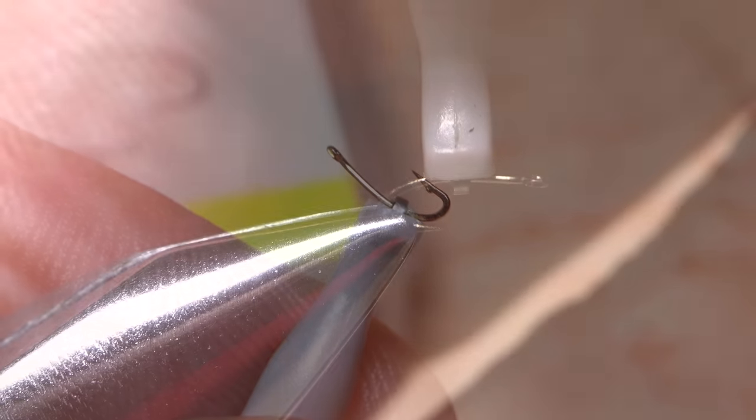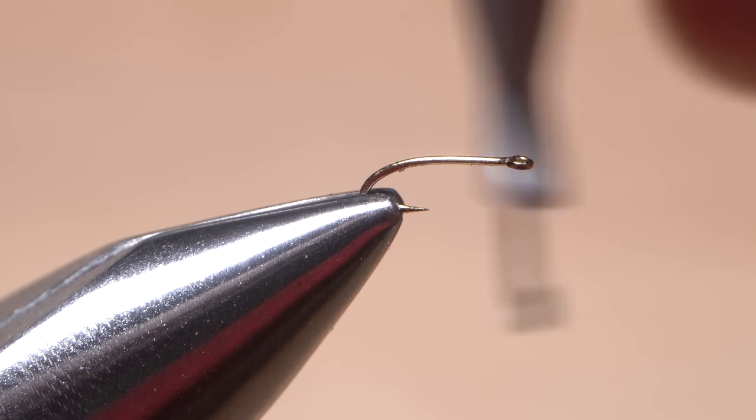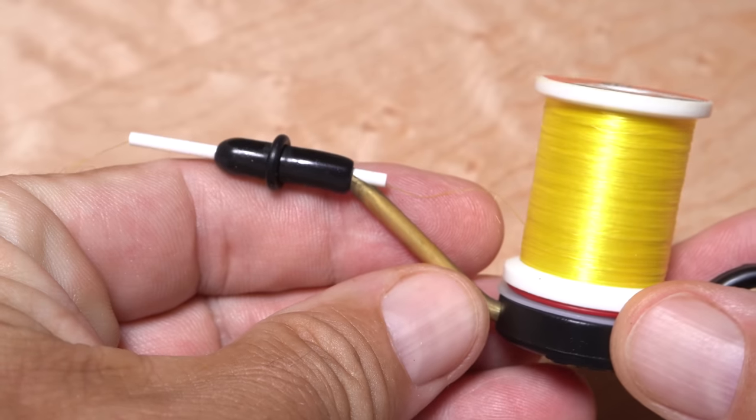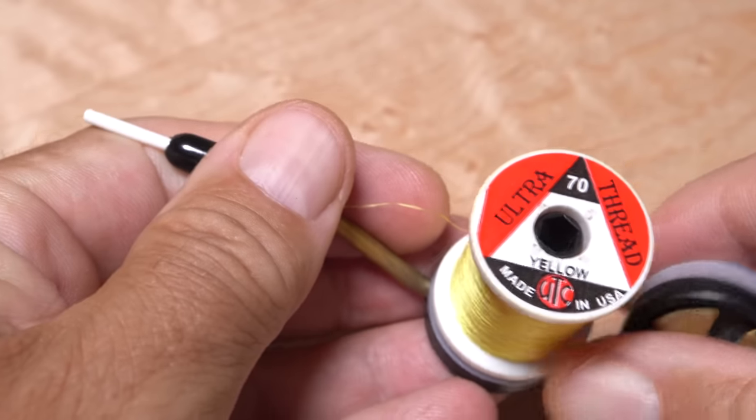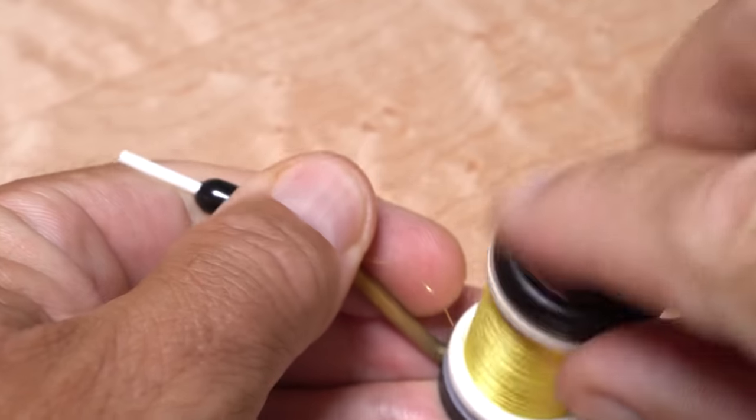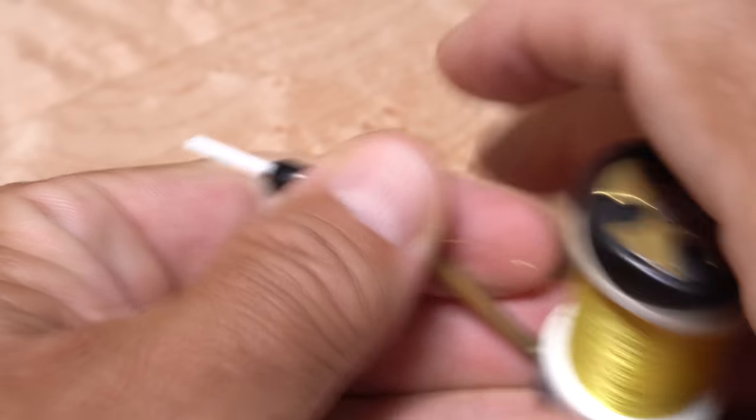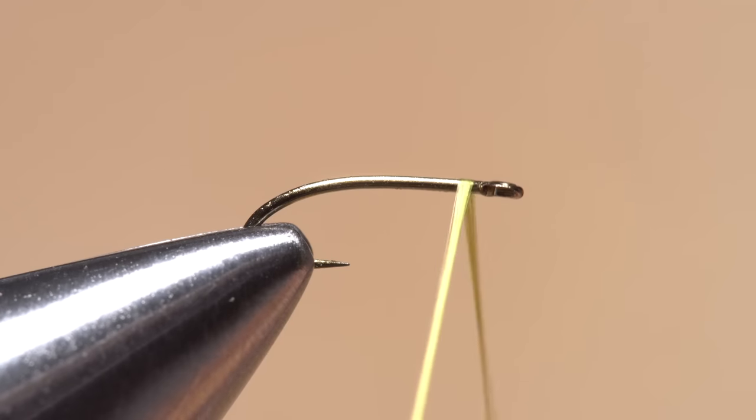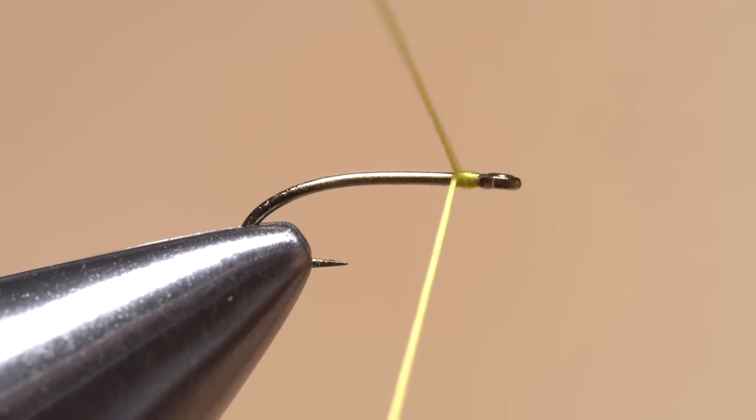As small as this fly is, UTC 70 is still a very appropriate thread. Here I'm using a yellow color to closely match the midge larvae I sample on my local stream, particularly during the winter months. Get the thread started on the hook shank behind the eye, and after taking a dozen or so wraps rearward, snip off the excess tag.